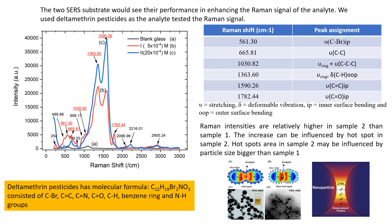The two SERS substrates were then evaluated for their performance in enhancing the Raman signal of the analyte. From the results, we can see that sample 2 shows more hot spots than sample 1, and at some points the Raman intensity in sample 2 is higher than in sample 1. The deltamethrin pesticide Raman peaks were successfully detected in both samples. The higher Raman intensity in sample 2 compared to sample 1 is because the increased hot spots in sample 2 are influenced by its larger particle size.